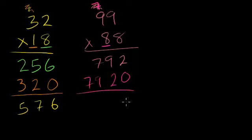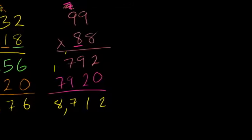2 plus 0 is 2. 9 plus 2 is 11, carry the 1. 1 plus 7 is 8, 8 plus 9 is 17, carry the 1. 1 plus 7 is 8. 8,712. Let's keep going.